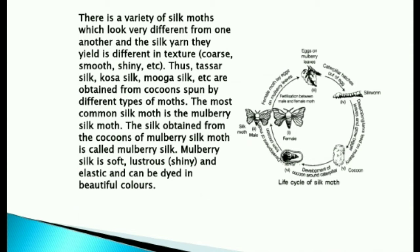There is a variety of silk moths which look very different from one another, and the silk yarn they yield is different in texture — coarse, smooth, shiny, etc. Thus, Tassar silk, Mouga silk, and other types come from different moths. The most common silk moth is the mulberry silk moth. The silk obtained from the cocoons of the mulberry silk moth is called mulberry silk. Mulberry silk is soft, lustrous, shiny, and elastic, and can be dyed in beautiful colors.